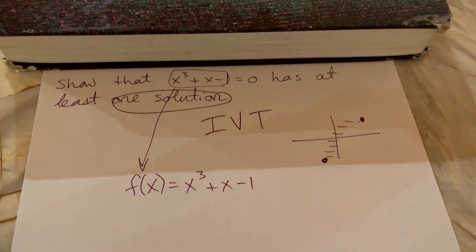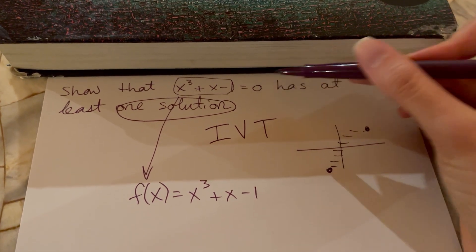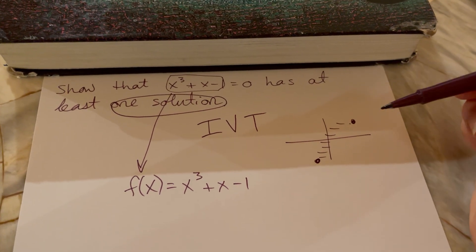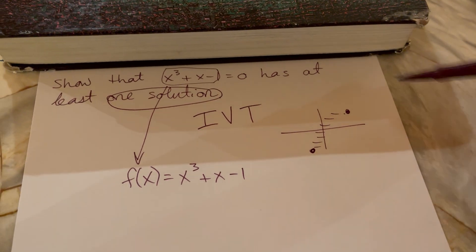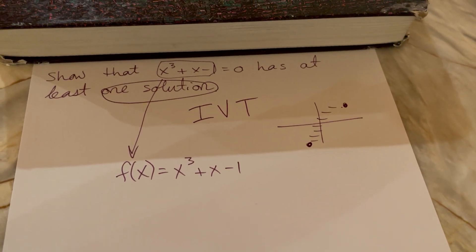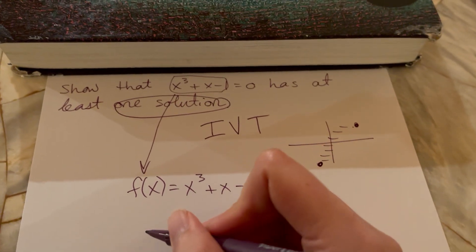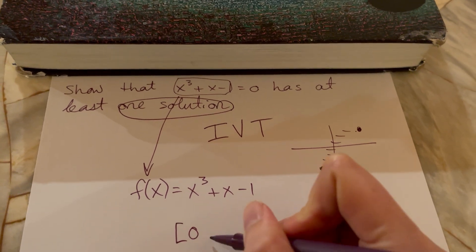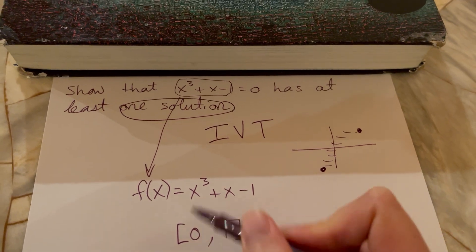And you're trying to show that this function has an x-intercept somewhere. In many cases you're given an interval to work on and you can plug in each of your endpoints. If you're not given an interval you can just come up with a simple interval and see if it works. If it doesn't work try a different interval. So for instance you could try the interval zero comma one maybe and see what happens.